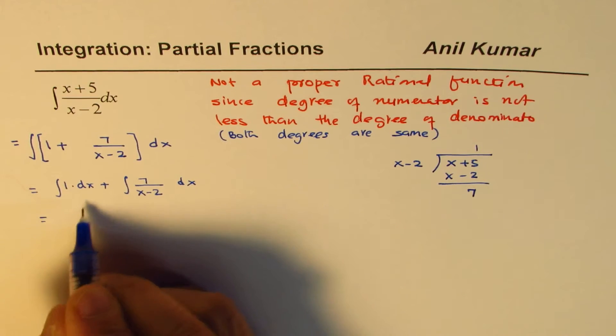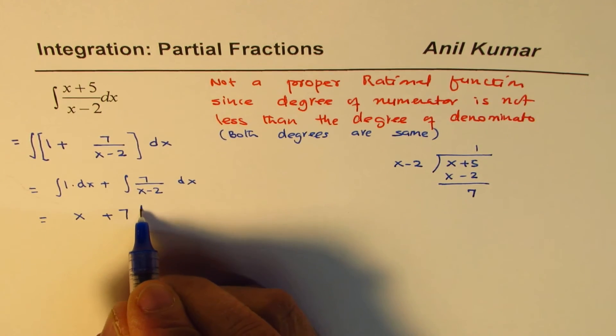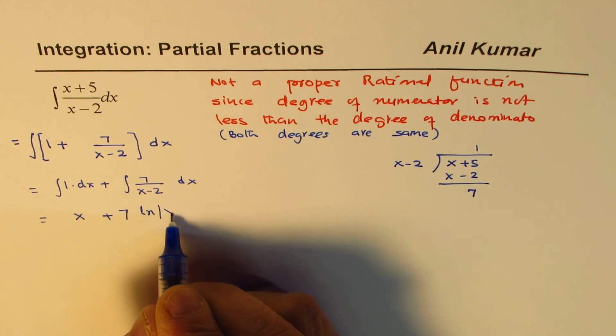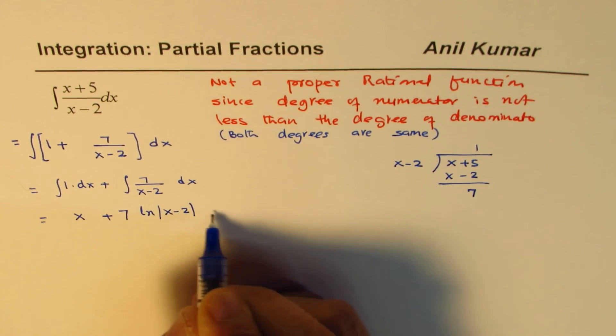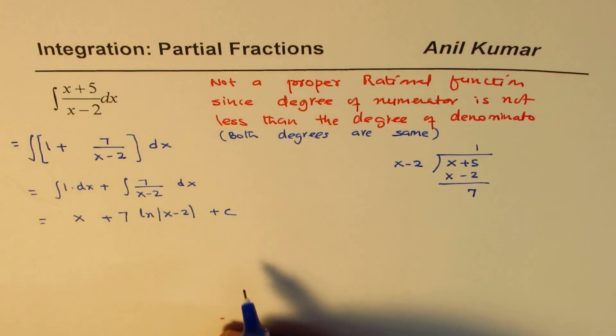And that gives you the answer as x plus, and that is log of, this is 7 times ln x minus 2, plus c. So that is the result which you get by integrating this function.